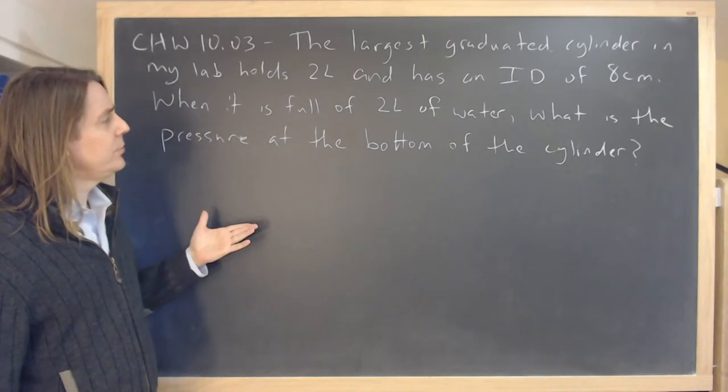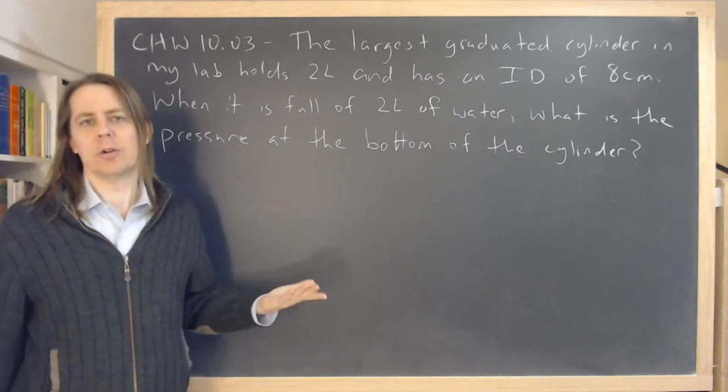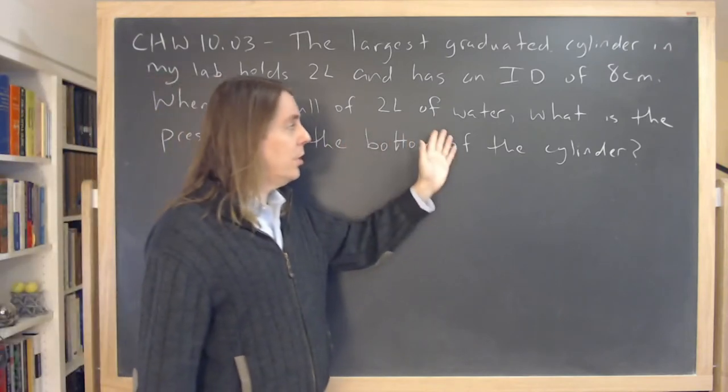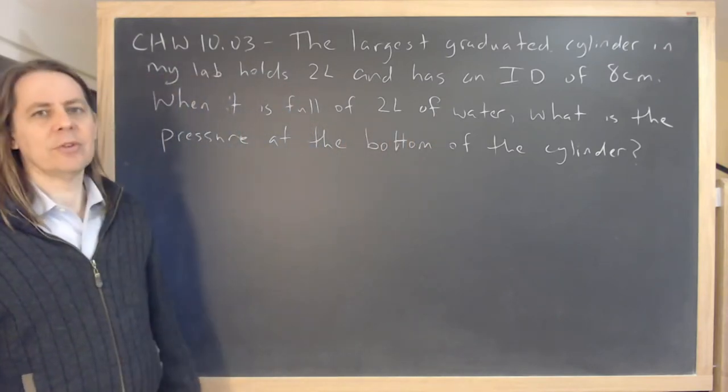So when it's full of two liters of water, like I said, it doesn't have to be water. It could be full of ethanol or something. When it's full of two liters of water, what is the pressure at the bottom of the cylinder?